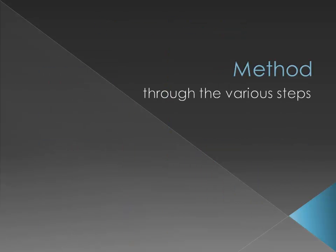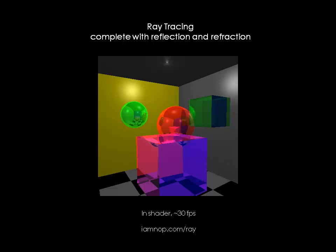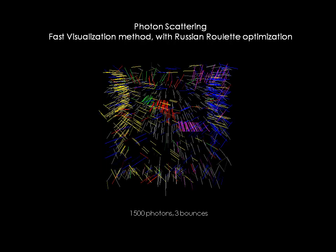Now I will walk through the steps in greater detail. First, I set up the initial rendering framework with simple ray tracing on the shader. Here is a rendered image from the framework. It has a decent performance of 30 fps. The code is now live and can be seen.